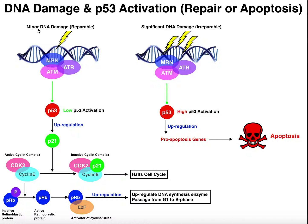Let's talk about the case of minor DNA damage — this is actually the most complicated case, so we'll cover it first. When there's minor DNA damage, you have a low or only a moderate activation of p53. When this happens, p53 is going to trigger the upregulation of another protein called p21.